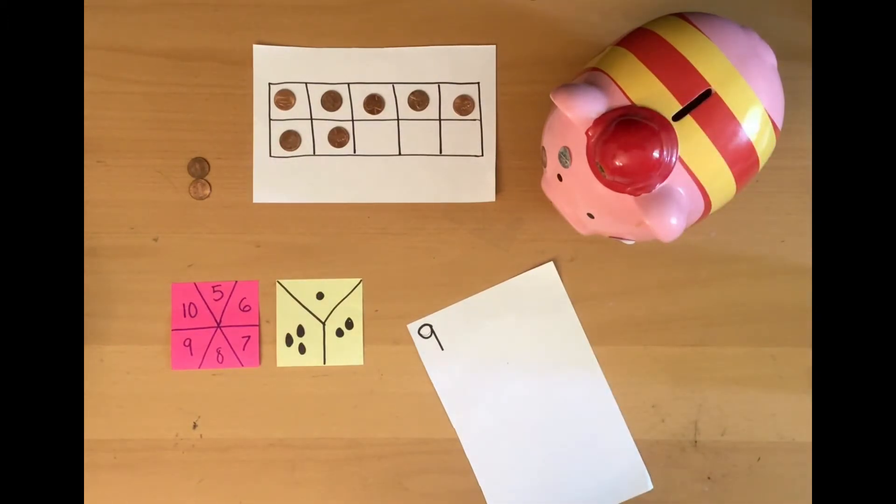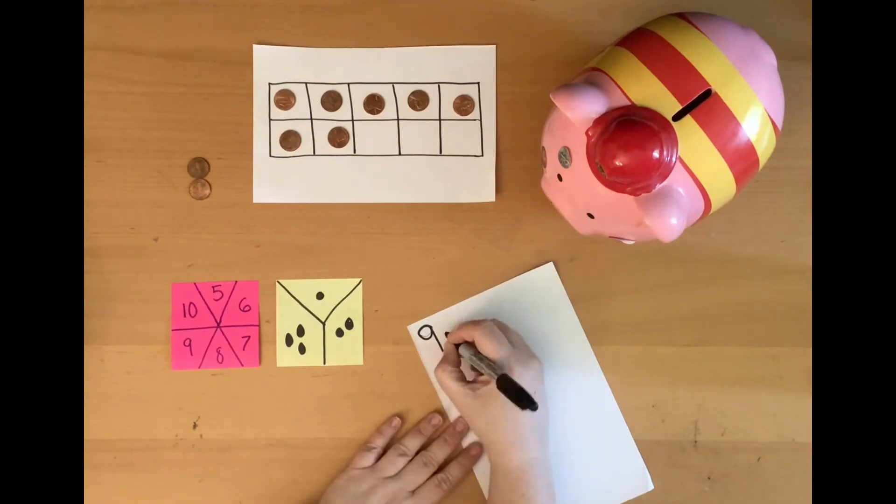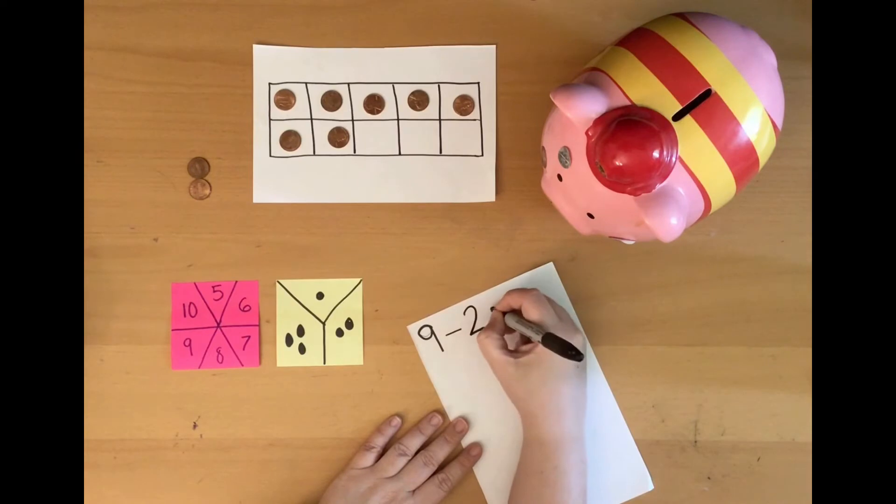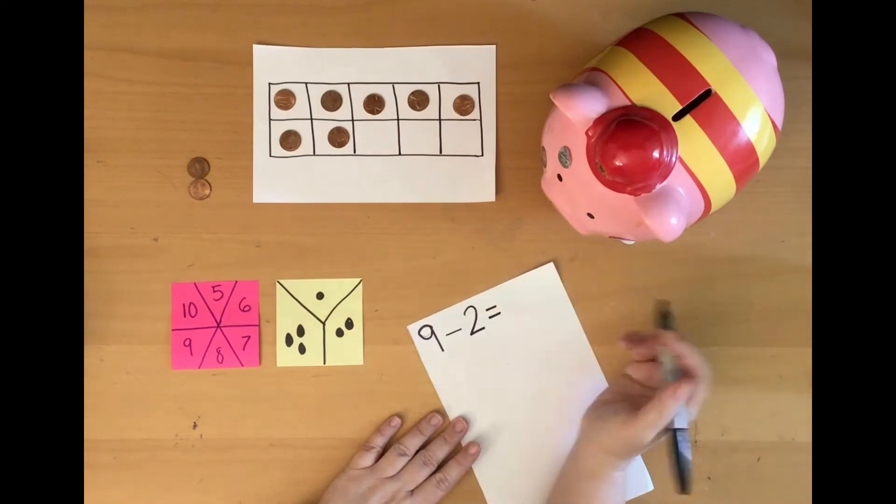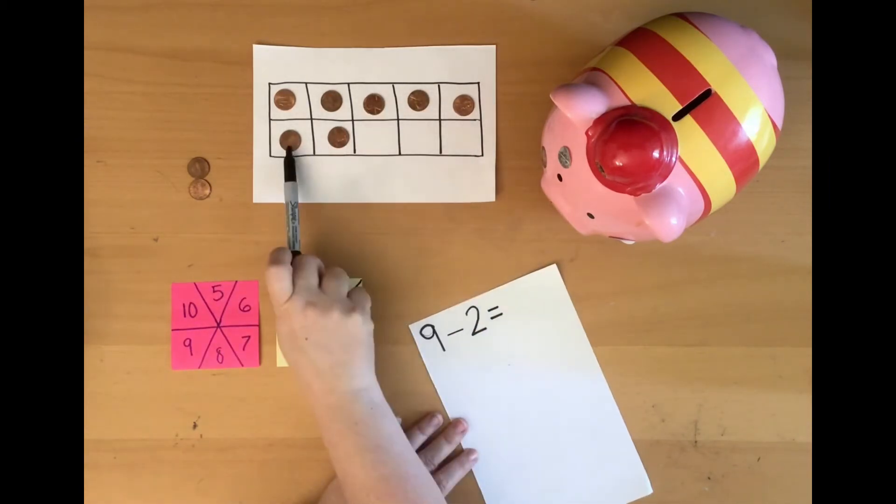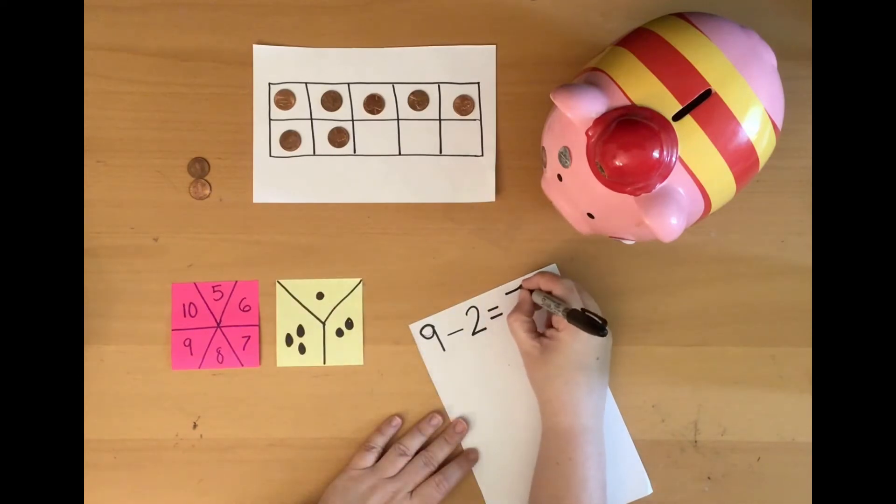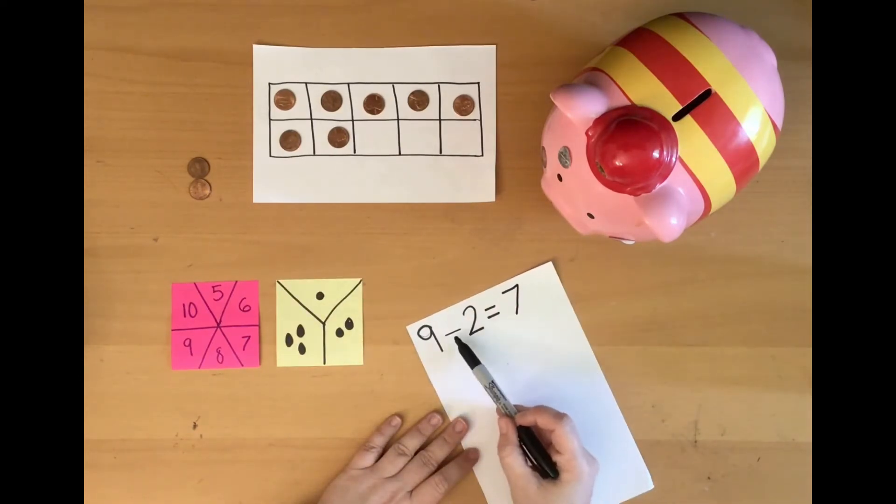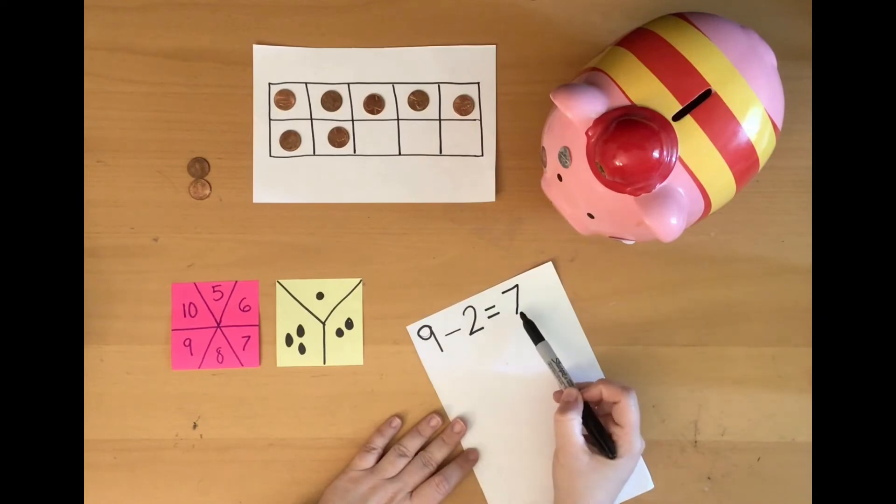So did we get 2 more or did we take 2 away? Right. We took 2 away. So I'm going to say minus 2 equals, well, we had 9, we took 2 away. How many are left on my 10 frame? 5, 6, 7. Good job. So let's read this equation together. 9 minus 2 equals 7.